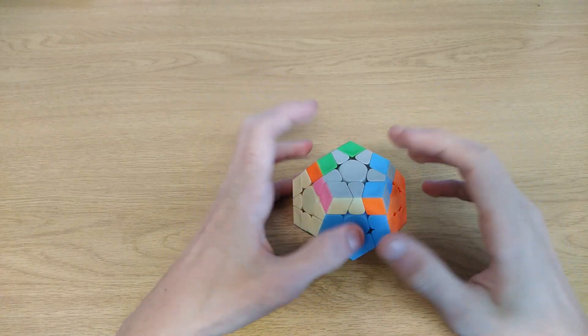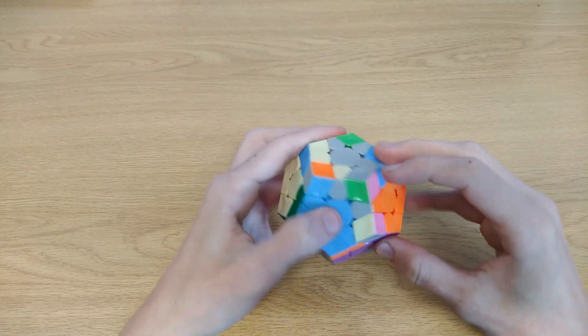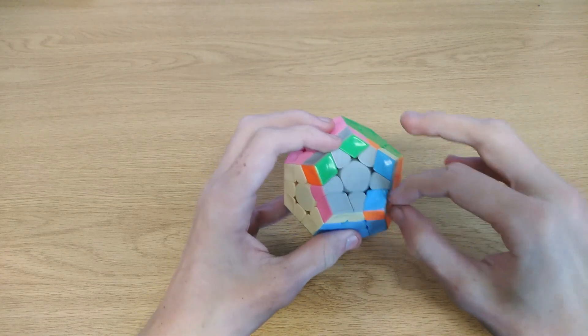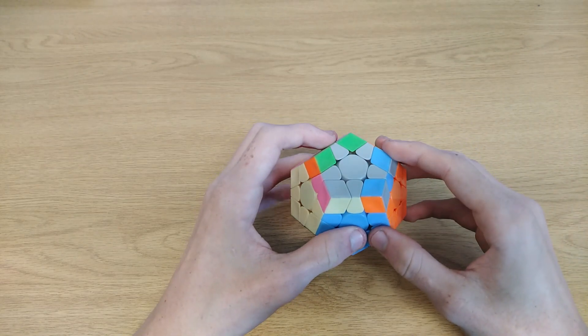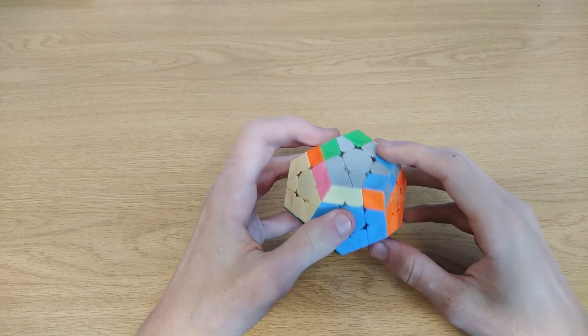And there's an easy way to test this. You can just take a 3x3 and look for some algorithms that will do the same thing as the, for instance, the F sexy move F' and then you can see what corners it affects and how it affects them. But for me, honestly, two per case is really enough.